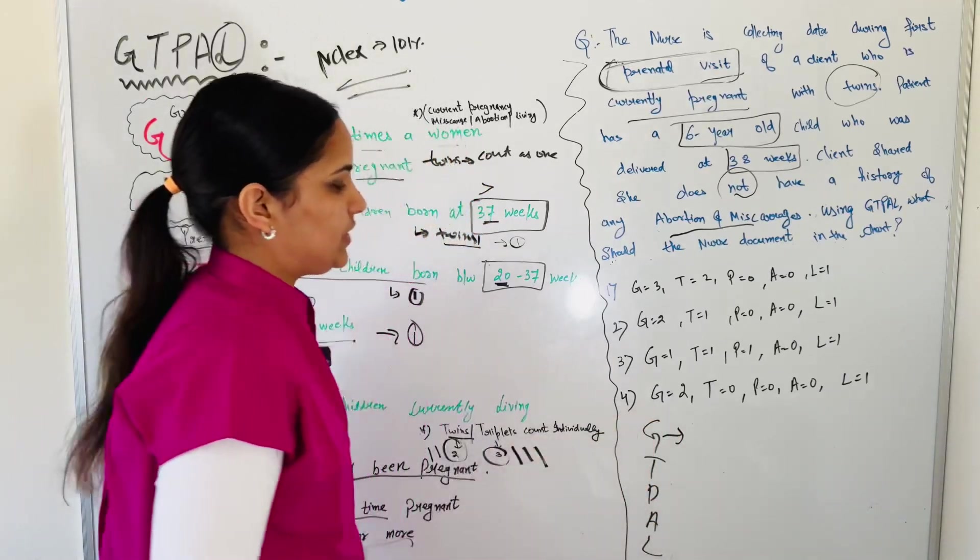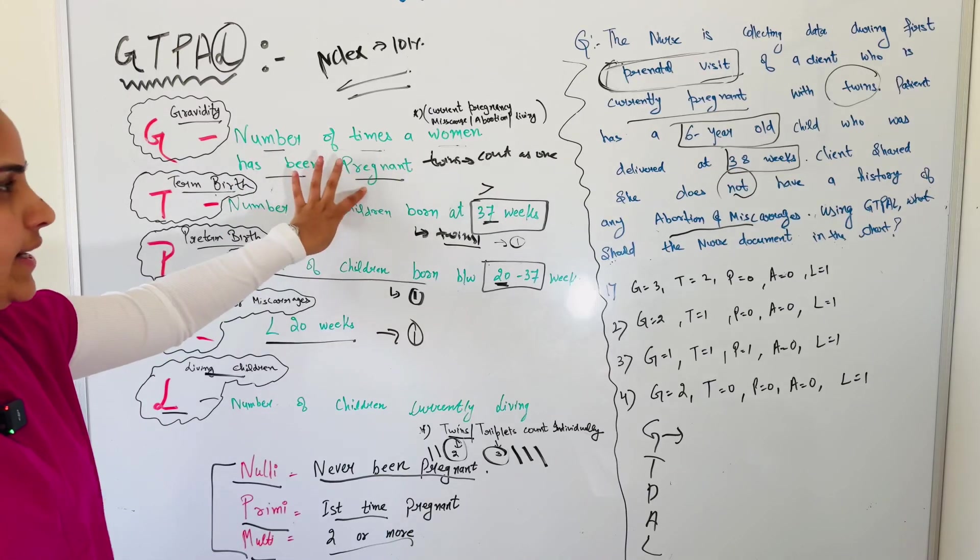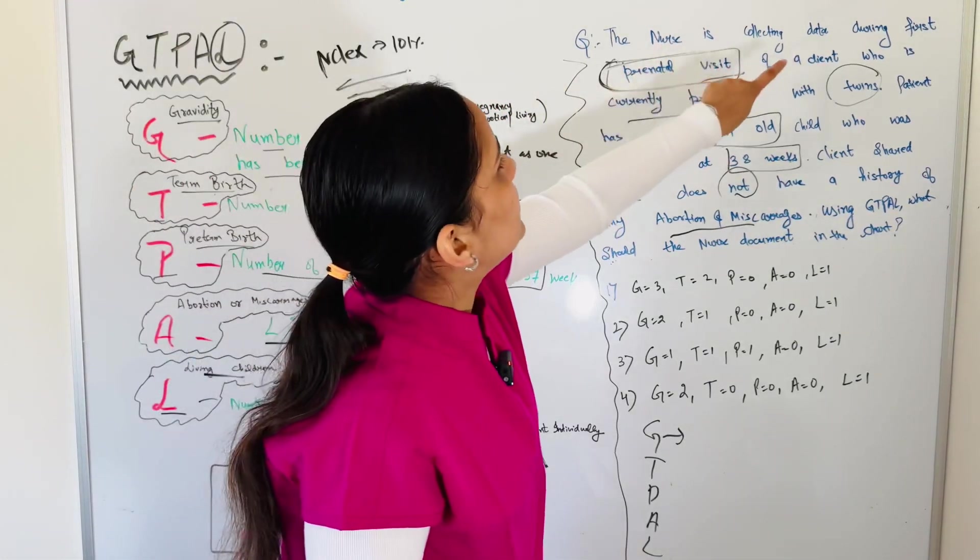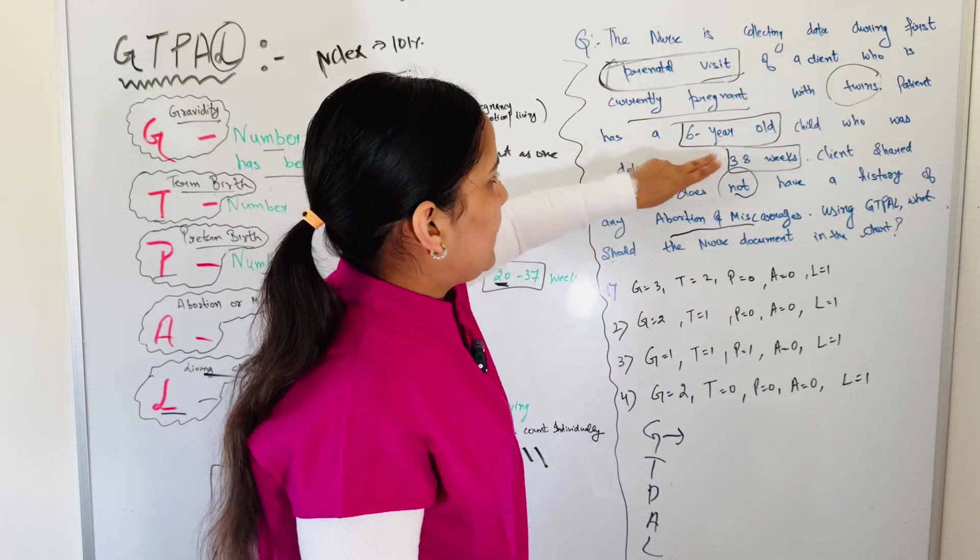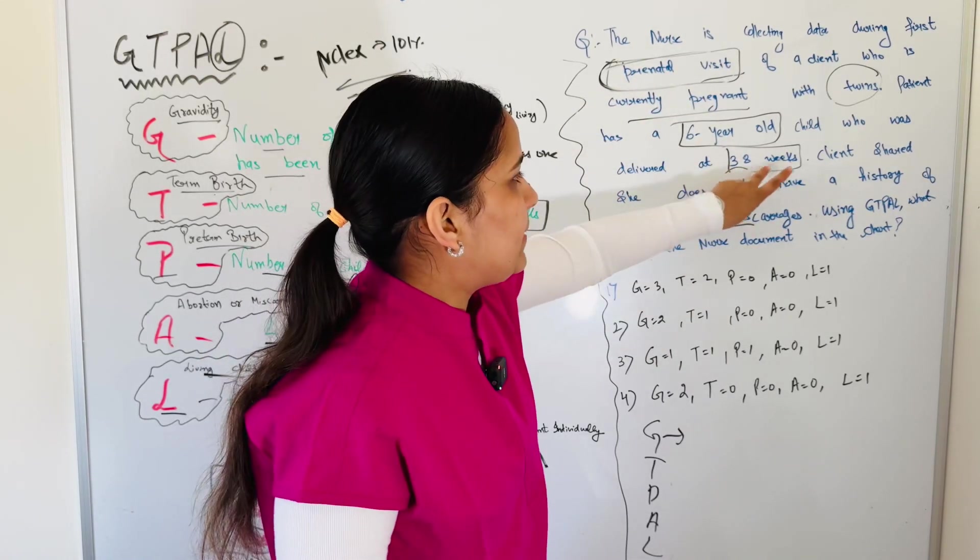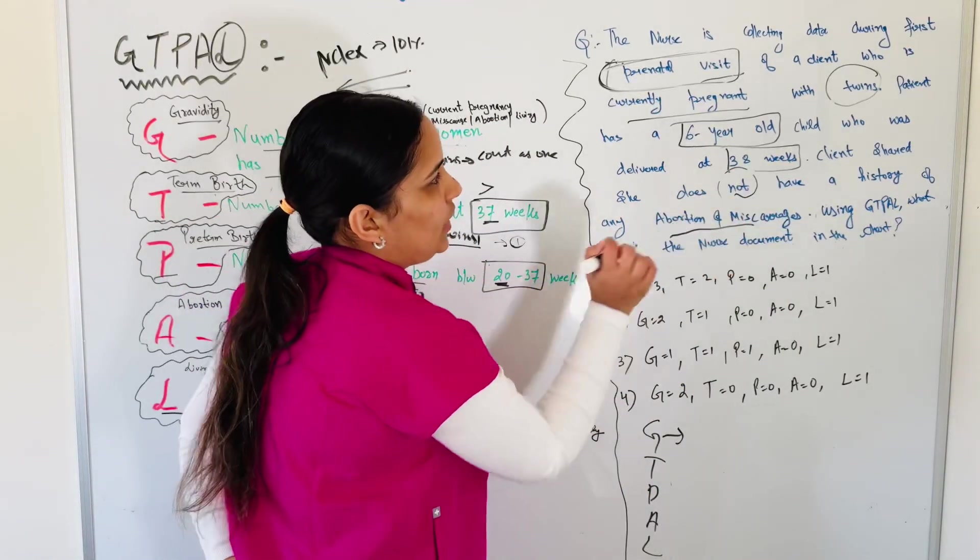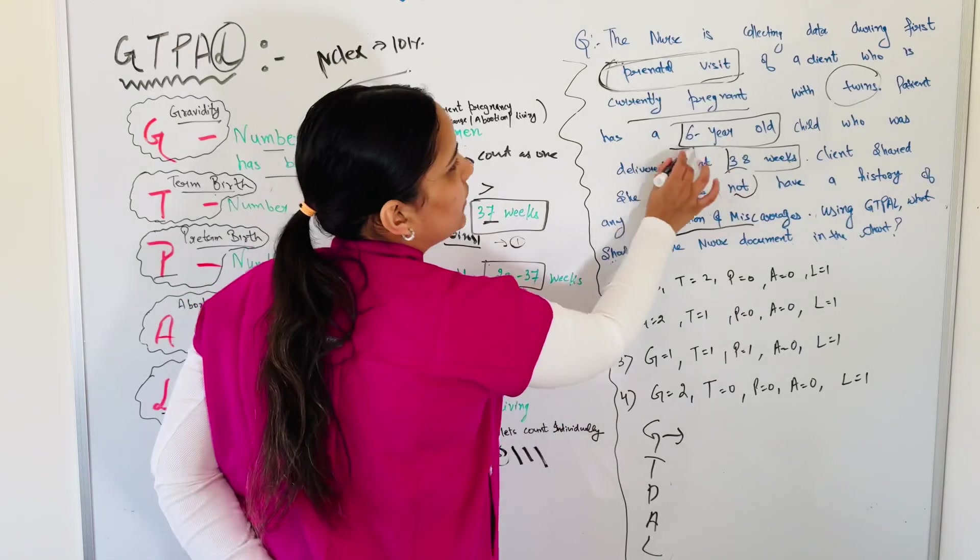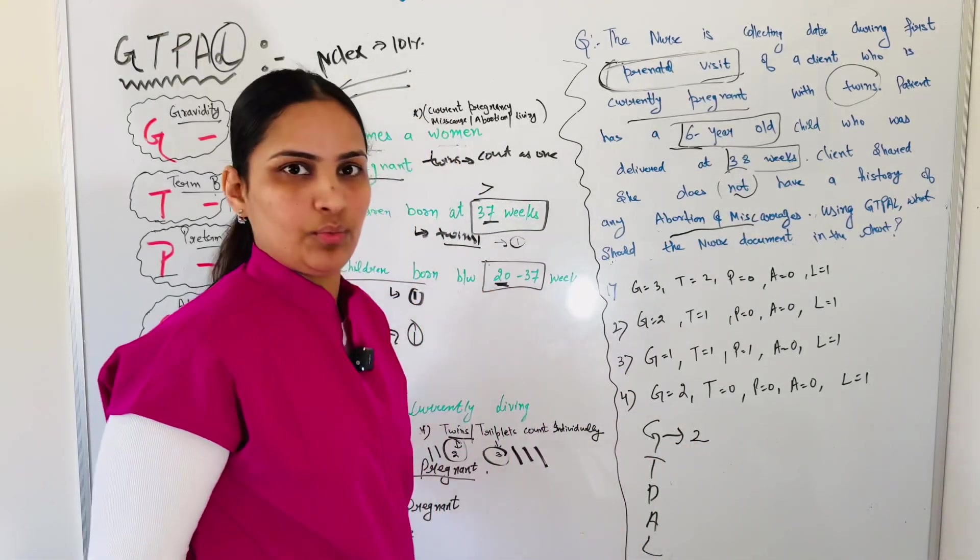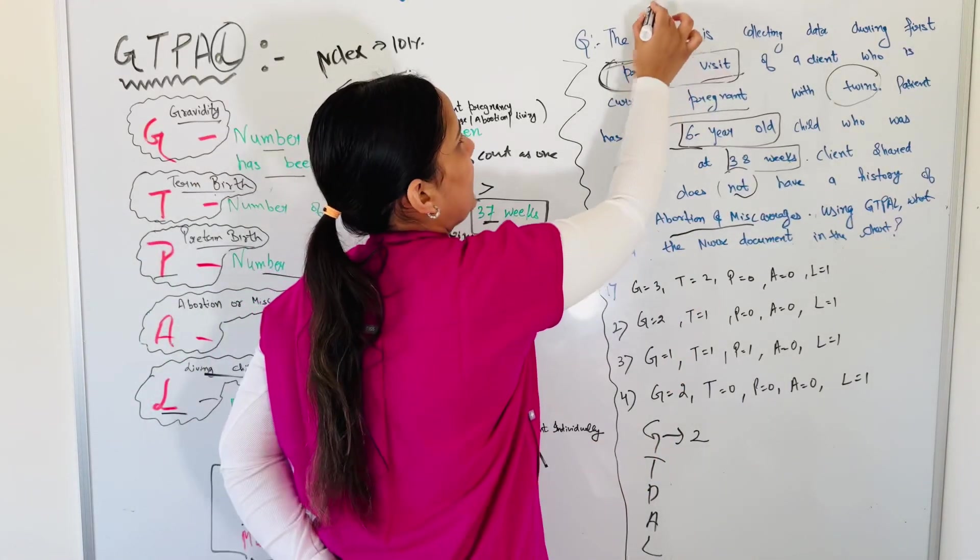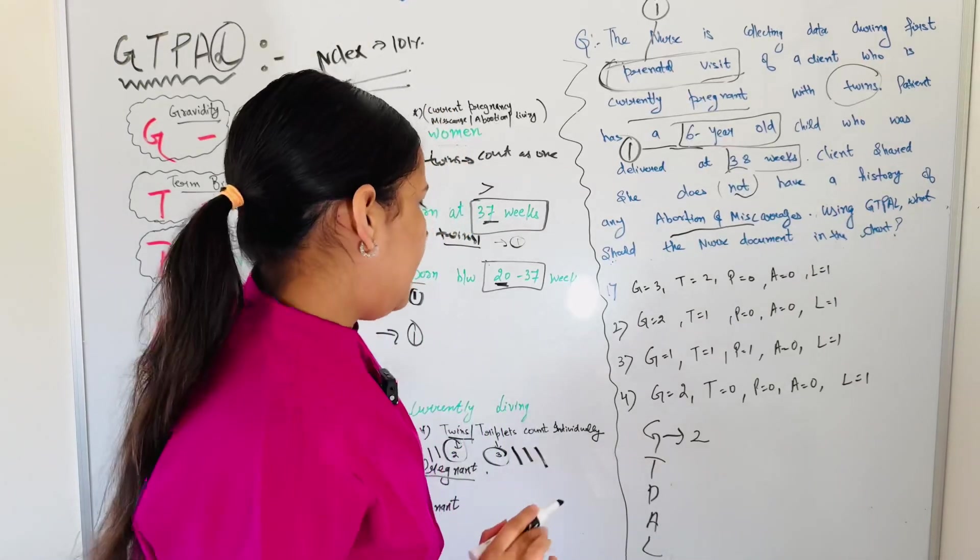Now what do we do? Always when you solve GTPAL questions, you can write something like this: GTPAL. This way you won't get confused. G is, we know, G is gravidity, number of times a woman has been pregnant. So let's see how many times. The nurse is collecting data, first prenatal visit, one. Delivered at 38 weeks, one, right? Again, she has a baby who is currently alive, six year old, right? So two total. Two. One here, she is currently pregnant. One here, she has a baby.